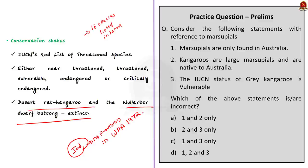Before concluding this discussion, let us do a quick recap. We saw what a marsupial is, the basic characteristics, and the difference between mammals and marsupials. Then we saw about kangaroos, their habitat and conservation status. With this, let us conclude and take up the next news article.